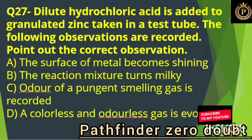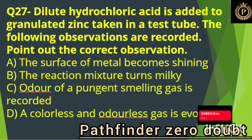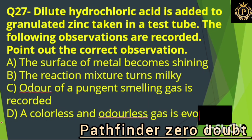Dilute hydrochloric acid is added to granulated zinc taken in a test tube. The following observations are recorded — point out the correct observation: Option D, a colorless gas is evolved.